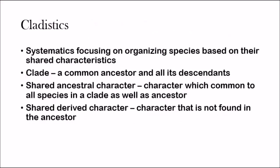In cladistics, there are two important terms. A shared ancestral character is a character common to all species in the clade as well as the ancestor — for example, all mammals have backbones, and so did their common ancestor. A shared derived character is a character not found in the ancestor but derived over time — for example, hair is found in mammals, but the common ancestor of mammals did not have hair, so it's a shared derived character.